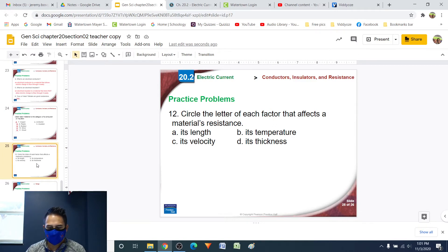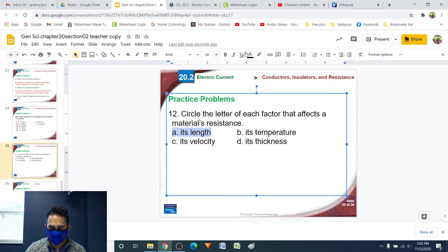Number 12, circle the letter of each factor that affects a material's resistance. So there are three things in this chapter section that was mentioned when it came to resistance. Remember, resistance is like how much friction there is inside of a wire. So there's three things that can affect how much friction there is. One is its length. The longer the wire, the more friction there is because there's more material that the charges have to flow through. So that will affect its resistance, the amount of friction that is inside of it. So A, that's one factor.